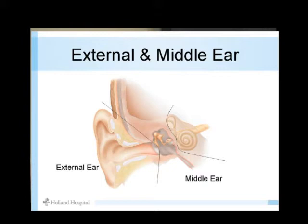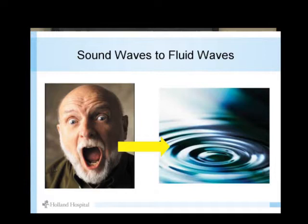The ossicular chain increases the power of the movement of the eardrum down to the third of those three ear bones, which functions kind of like a plunger. That plunger pushes in and out and creates a fluid wave. The conductive portion of hearing is turning sound waves into fluid waves — that's a mechanical change that has to happen.